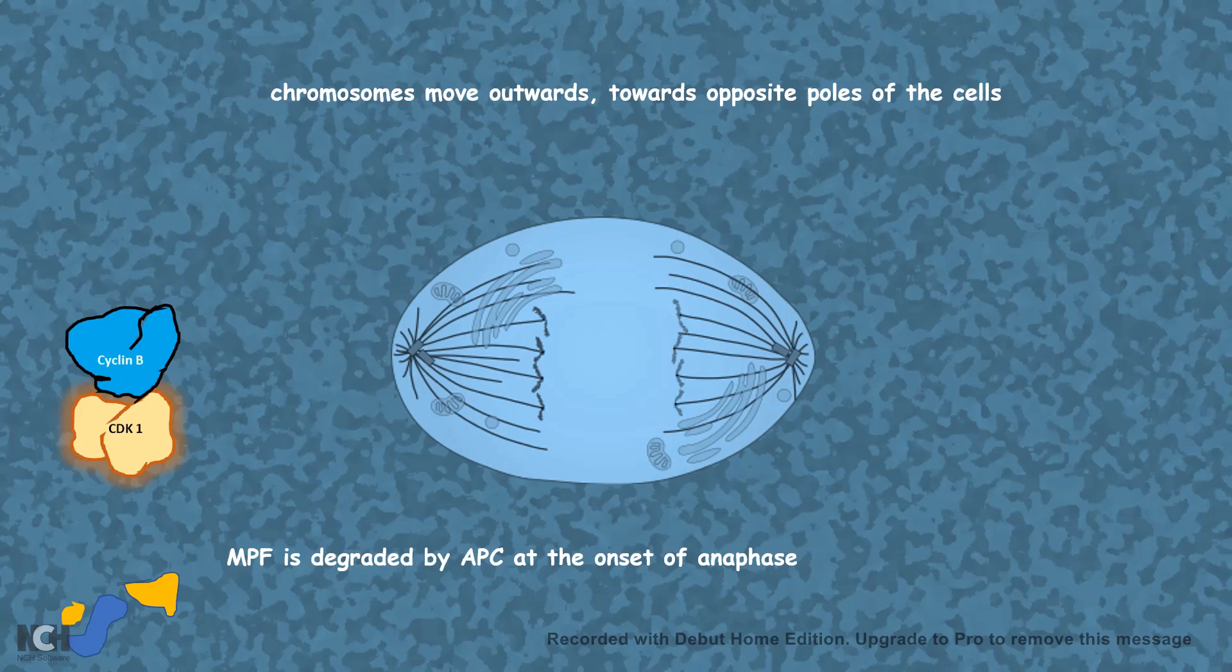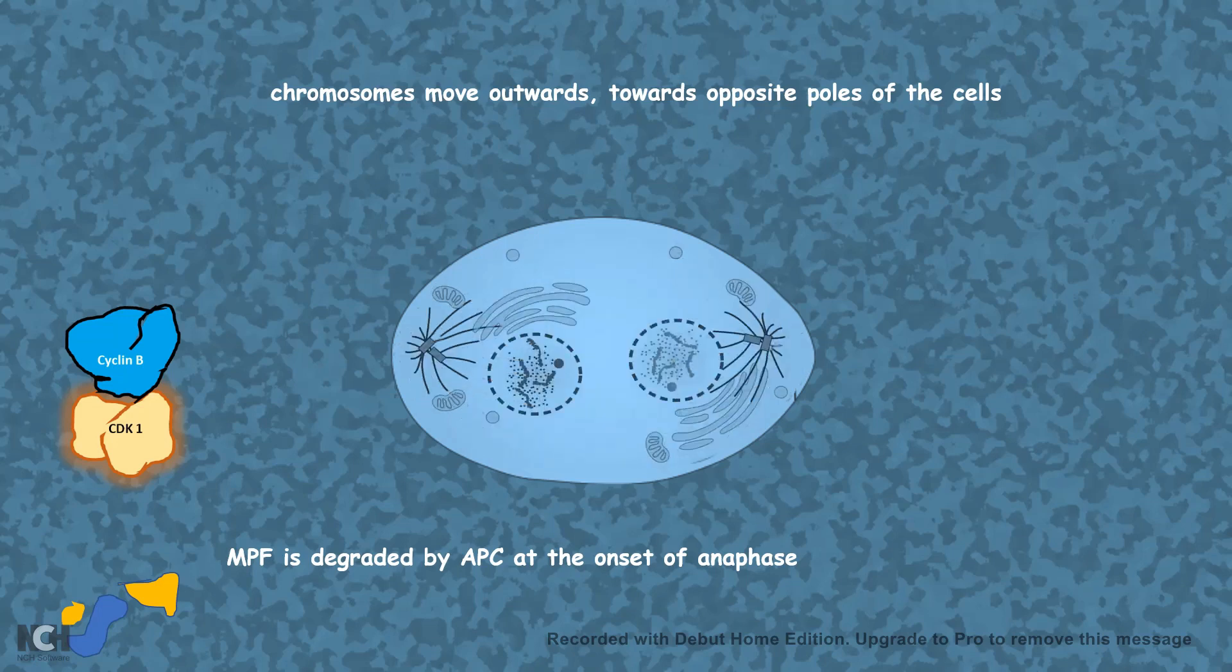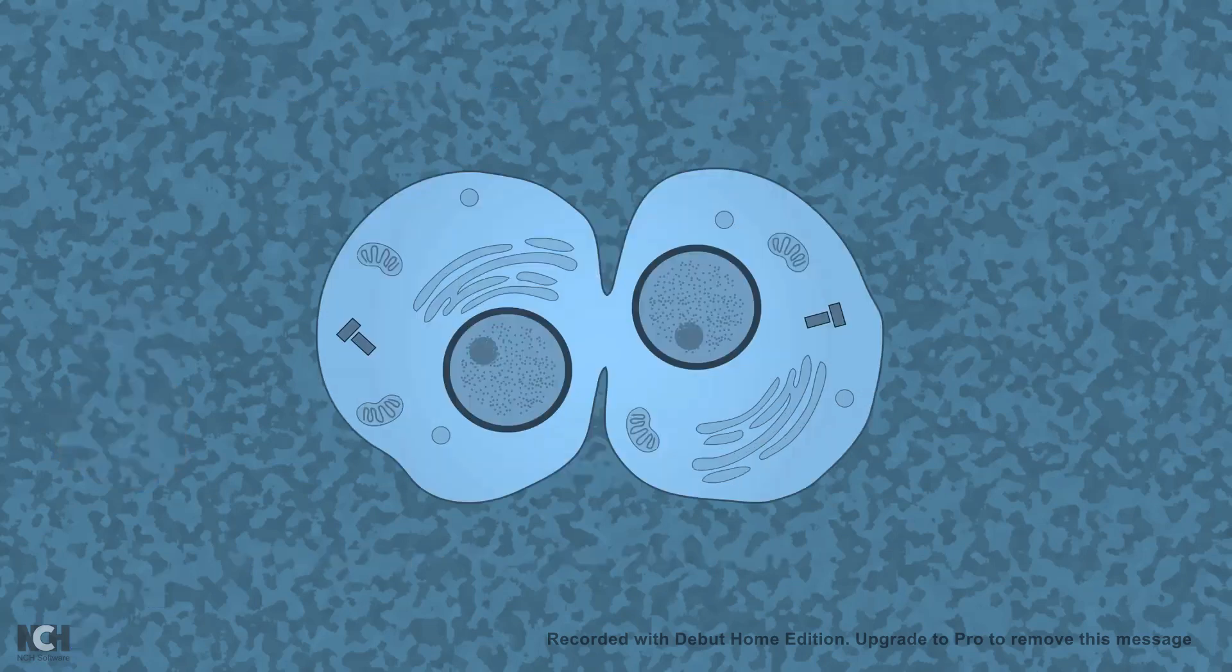At anaphase, the chromosomes are equally segregated towards the poles of the cells. After that, telophase starts. In telophase, the prevalent activity of dephosphorylase enzymes gets rid of phosphorylation from the nuclear pores and from lamins, such that they can reorganize. On that scaffold, nuclear membrane can reorganize as well. As a result, the nuclear membrane reorganizes and two distinct nuclei start to form.